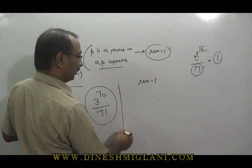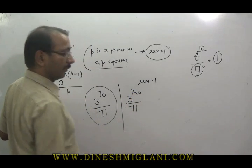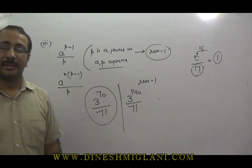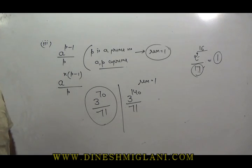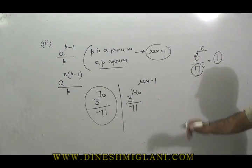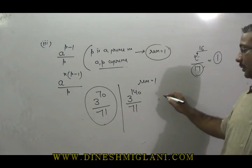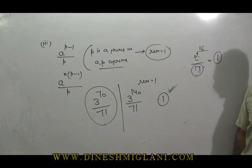Similarly, if we have 3 raised to the power 140 divided by 71: here 71 is a prime number and 71 − 1 = 70. Since 140 is a multiple of 70 — the power is a multiple of p − 1 — in that case also the remainder is always equal to 1.